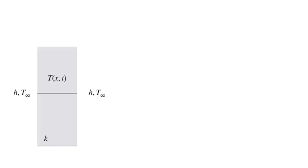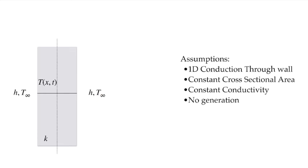Let's consider a plain wall situation where we have a wall subjected to a convection coefficient and an ambient temperature on either side, so it's a symmetric problem. We're going to assume one-dimensional conduction through the wall with a constant cross-sectional area, constant conductivity, and no generation within the wall. Notice that there's an axis of symmetry at the centerline, so we can look at only half of this solution.